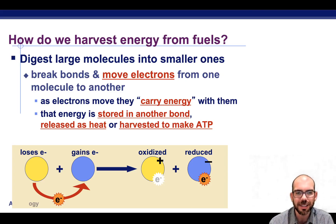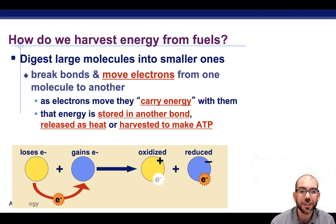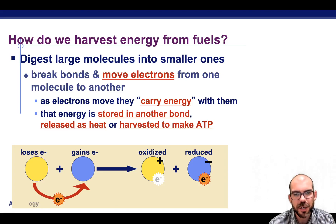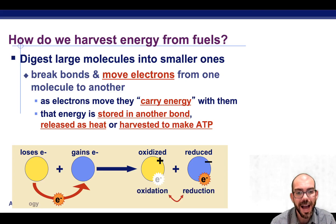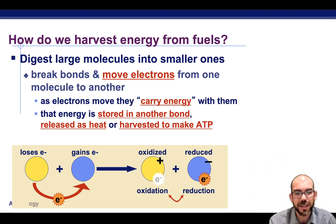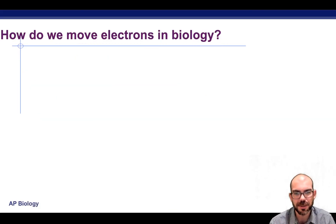You may remember the little phrase, LEO goes GER. LEO: lose electrons, oxidized. GER: gain electrons, reduced. So keep this in mind as we learn cellular respiration, because cellular respiration is a redox reaction, meaning there's an oxidation — something loses electrons — and a reduction — something gains electrons.